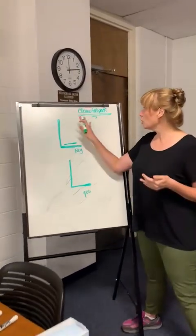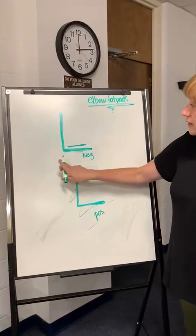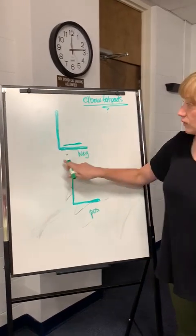So for realsies, this is our elbow fat pad. This is a 90 degree, perfect 90 degree lateral elbow.